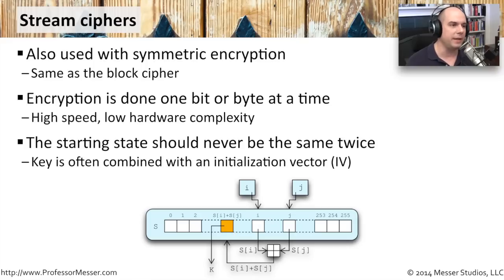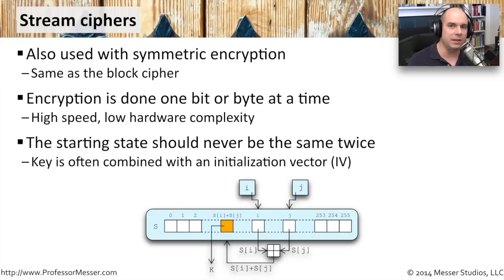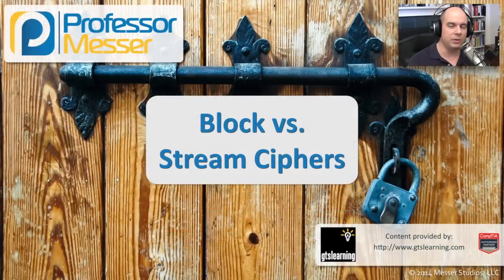One important aspect of stream ciphers is that the initialization vector, or IV, should never be the same when you're starting these streams. Otherwise, somebody may be able to figure out the initialization vector, the cipher, and the key being used, and apply it every time you send data across the network. So one very important part of cryptography and the use of stream ciphers is to make sure your IV is always changing whenever you're using it to encrypt information.